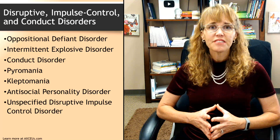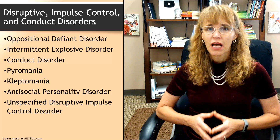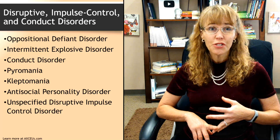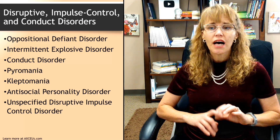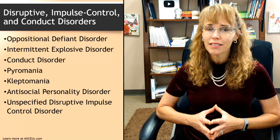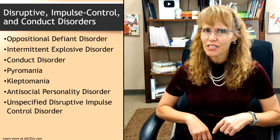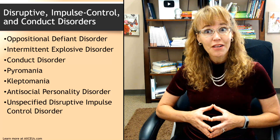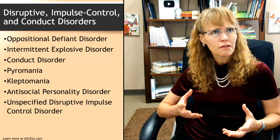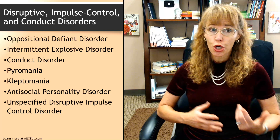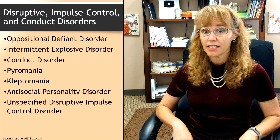In the DSM-5-TR, the category is Disruptive Impulse Control and Conduct Disorders. This includes oppositional defiant disorder, intermittent explosive disorder, conduct disorder, pyromania, kleptomania, unspecified disruptive impulse control disorder, and antisocial personality disorder. Antisocial personality disorder is also in the personality disorders category — some disorders appear in multiple categories — and we'll cover that when we get to personality disorders.